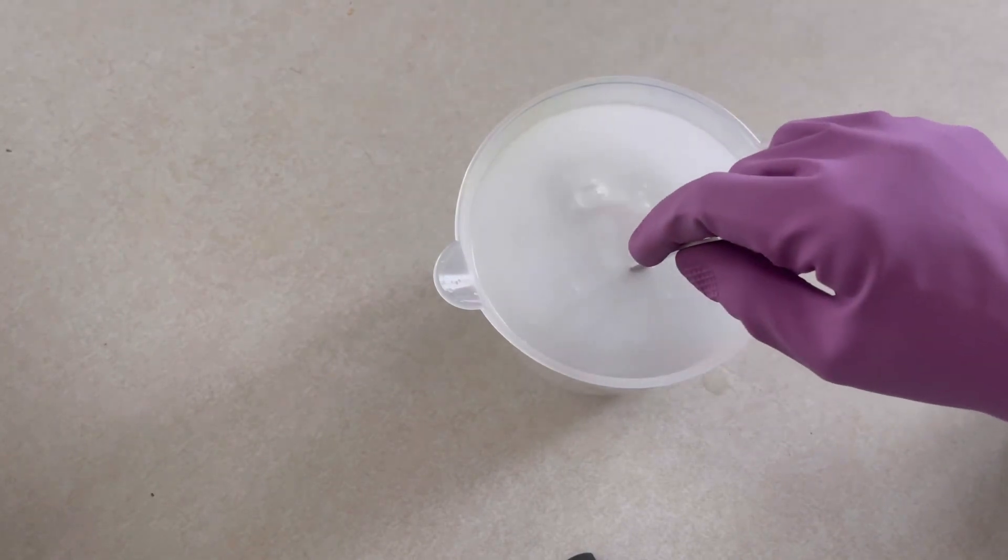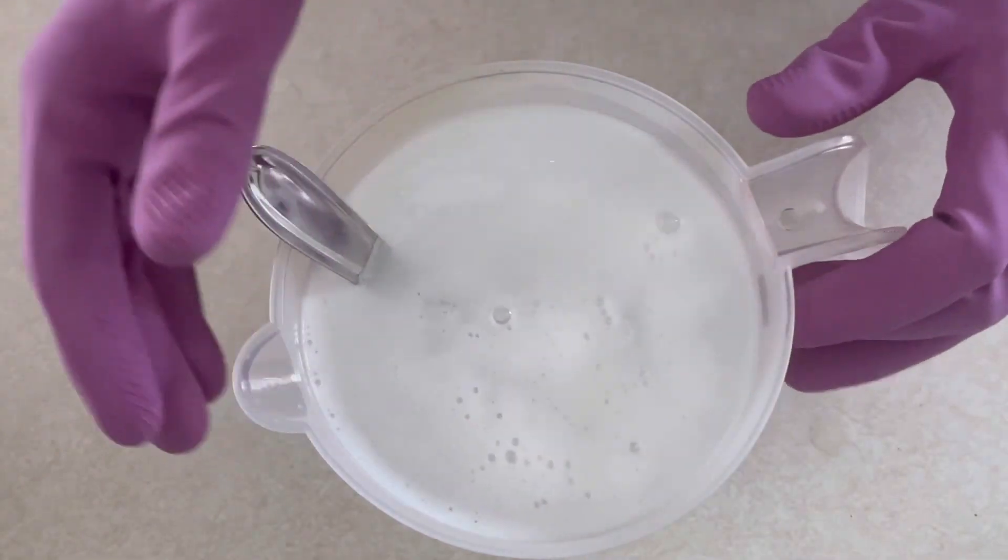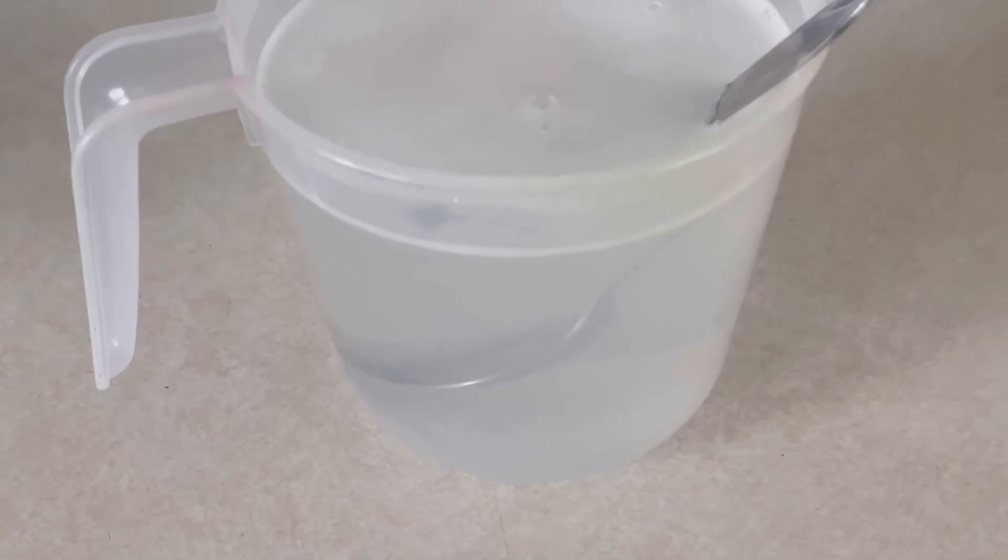Once all the potash flakes are dissolved, we are ready to add this lye water into our oils. Unlike sodium hydroxide lye water, we don't have to wait for the temperature to go down.